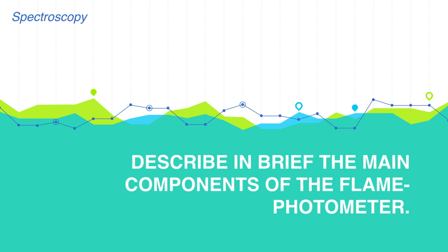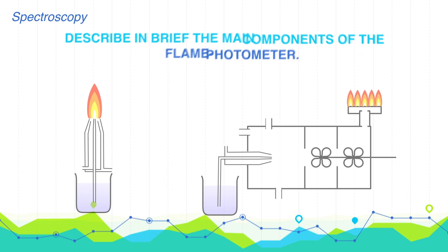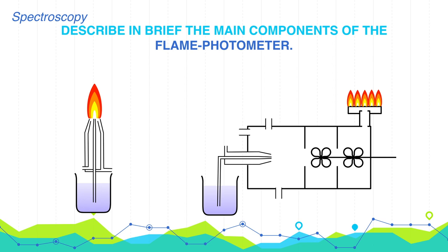Describe in brief the main components of flame photometry. The main components of flame photometry are as follows. First is the burners. The temperature of the burner must be more than 2000 degrees Kelvin. Burners used are of two types: one is total consumption burner and second is premix burner.